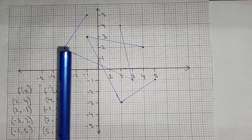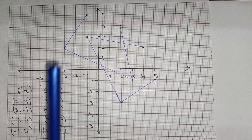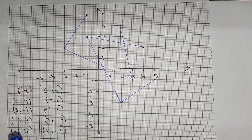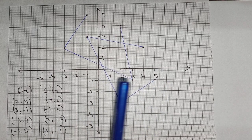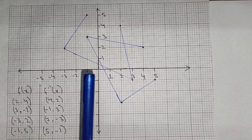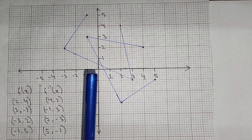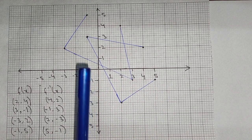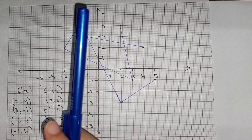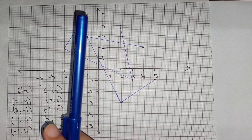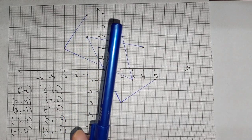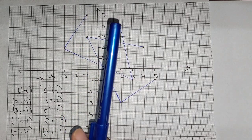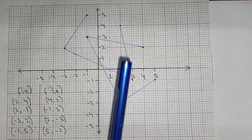And minus 1 and 5 — so minus 1 with respect to the x-axis and 5 with respect to the y-axis. We will place the dot and then we will join all the dots in this way.